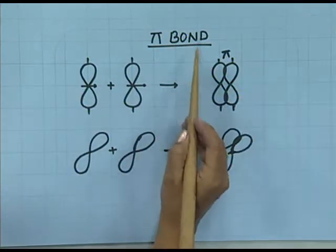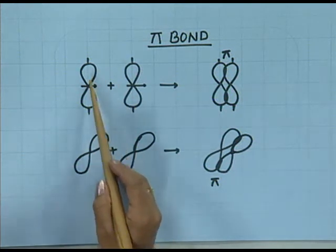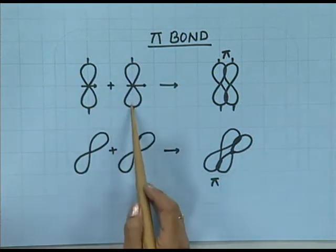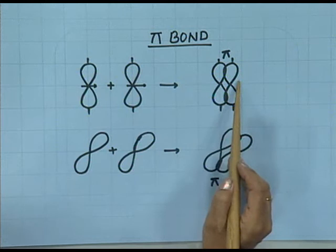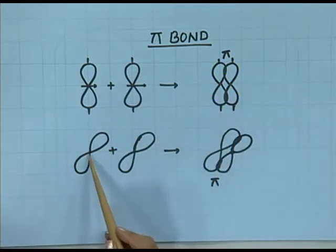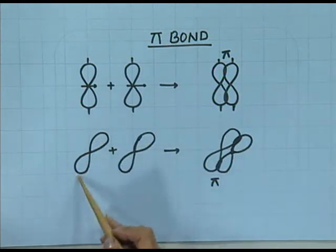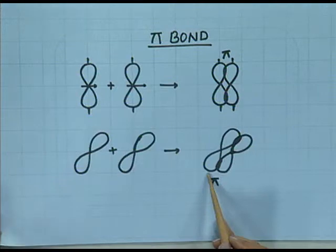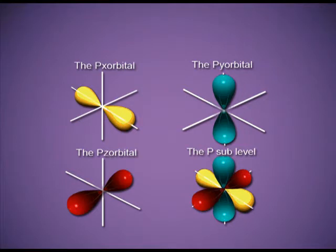Pi bond is the bond which is formed by sideways overlapping. It is possible with p and p orbitals which should be parallel. The py orbital and another py orbital overlap — the upper lobes overlap to form the electron cloud above the nuclear axis, and the lower lobes form the electron cloud below the internuclear axis. Similarly, pz and pz orbitals also form pi bonds. For the pi bond, the p orbitals should be parallel and oriented along the same direction. You can see the shapes of the s orbital, px, py, and pz orbitals — the p orbitals are mutually perpendicular.